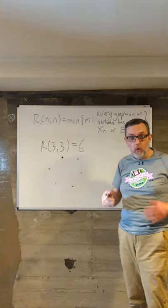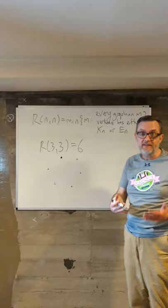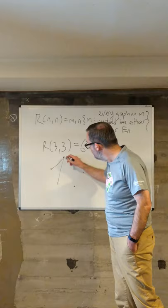So either this guy here is neighborly with at least three or is not neighborly with at least three. Let's say that he's neighborly with at least three. Then we have this kind of structure.